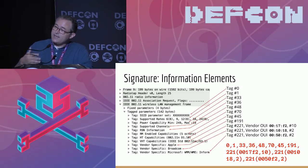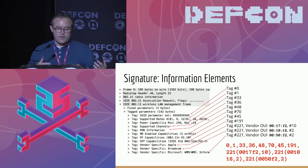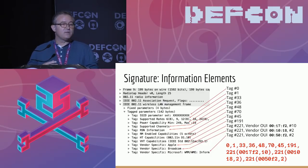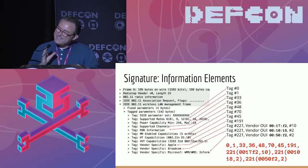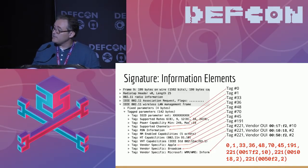In addition to the standard elements, there is a mechanism for vendors to define their own. Vendor extensions are type 221, with an ID for the vendor called the organizationally unique identifier or OUI, followed by a subtype so that the vendor can define multiple of their own types. Because the length field provides enough information to skip over the IE, any Wi-Fi client device can interoperate whether it understands that vendor extension or not — it just skips over the ones it doesn't implement.